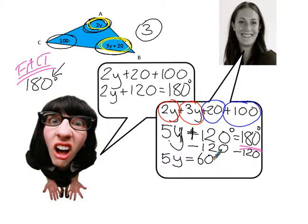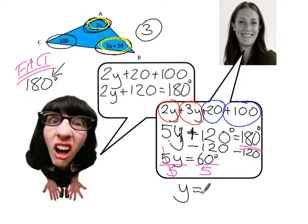That leaves me with 5y equals 60 degrees. Now 5 times y is equal to 60. So I need to do an inverse operation — just as I did when I took away 120 — but this time I'm doing a division. So I'm going to divide both sides by 5. These 5s cancel. I'm going to end up with y is equal to 60 divided by 5, which is going to be 12 degrees. Is that OK, Gertrude? Yeah, I think so. Thanks, Miss Whitehead.